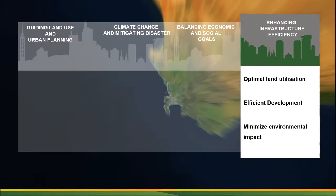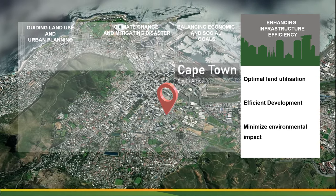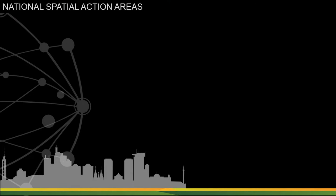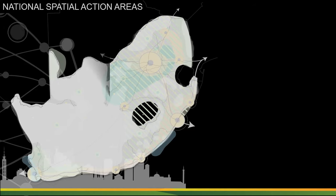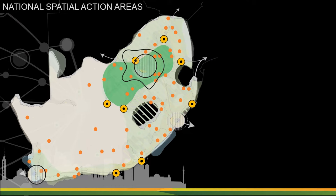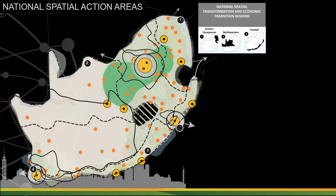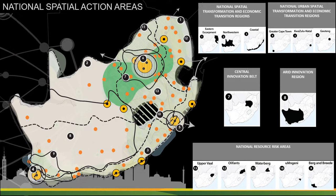Enhancing infrastructure efficiency, by providing a framework for strategic infrastructure placement to serve current and future populations efficiently, the NSDF contributes to significant infrastructure cost savings and ensures that services are available where most needed. This is related to SDG 9, industry, innovation and infrastructure. Following on from the directive in the NDP, the NSDF identifies areas of significant national risk and opportunity and potential. In order to create a shared, smaller, better connected and more sustainable South Africa, the NSDF identifies the most urgent short-term strategic spatial development catalysts to bring about radical spatial transformation at scale, manage and mitigate rising national risks, and move the country at speed towards the long-term ideal national spatial development pattern. These areas, of which there are five types, are called National Spatial Action Areas.